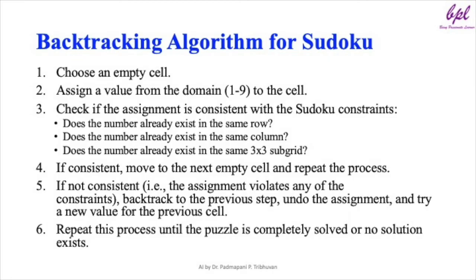Now let's apply the backtracking algorithm to Sudoku. Choose an empty cell and assign a value from the domain 1 to 9. Check if the assignment is consistent with the Sudoku constraints: does the number already exist in the same row? Does it already exist in the same column? Does it already exist in the same 3x3 subgrid? If consistent, move to the next empty cell and repeat the process. If not consistent — i.e., the assignment violates any constraint — then backtrack to the previous step, undo the assignment, and try a new value for the previous cell. Repeat until the puzzle is completely solved or no solution exists.